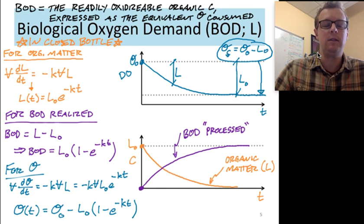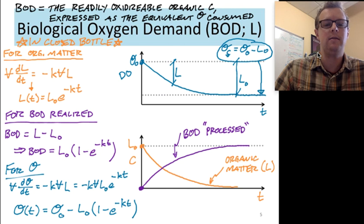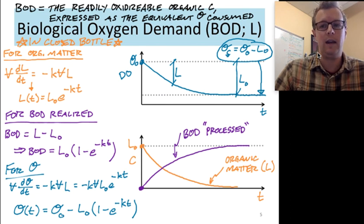It's what we started with minus that initial BOD concentration times 1 minus e to the minus KT. Now, what's the key takeaway from this slide? Because it's got tons of writing, tons of equations on it. Decomposition of organic matter and removal of oxygen trend together, and they are directly related to one another. So oxygen and BOD mass balances have to be coupled together. And I've done that explicitly with the last blue equation on the bottom of the slide there.